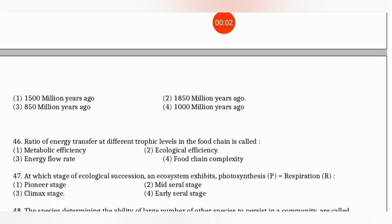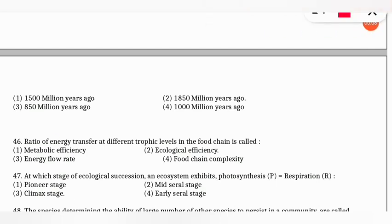The next question: the ratio of energy transfer at different trophic levels in a food chain is called what? The correct option is option 2 — ecological efficiency is the ratio of energy transfer at different trophic levels in a food chain.